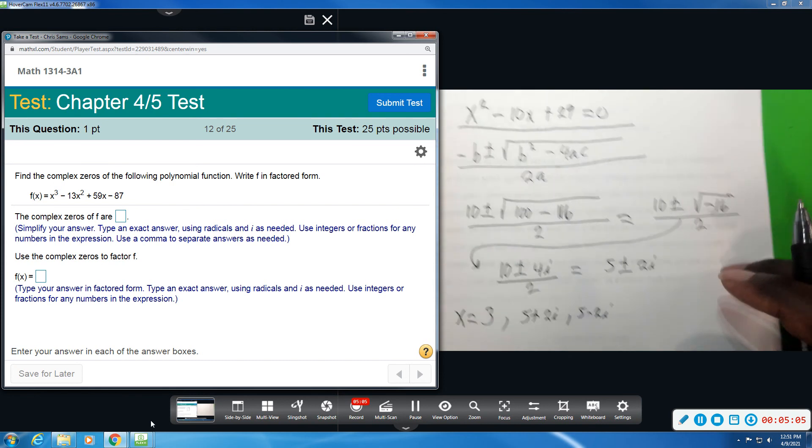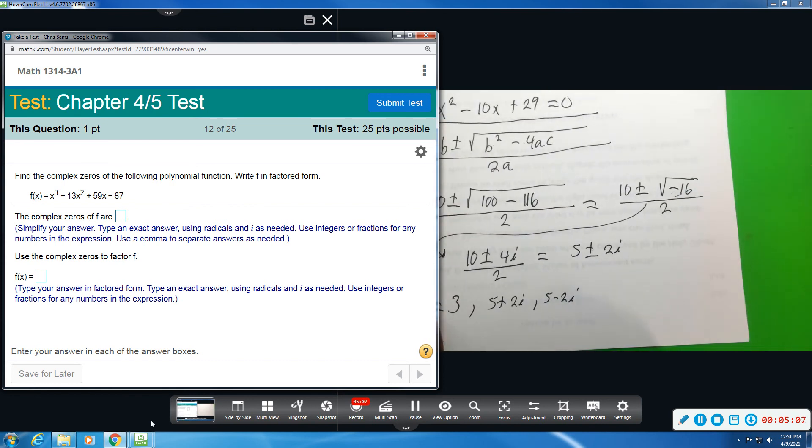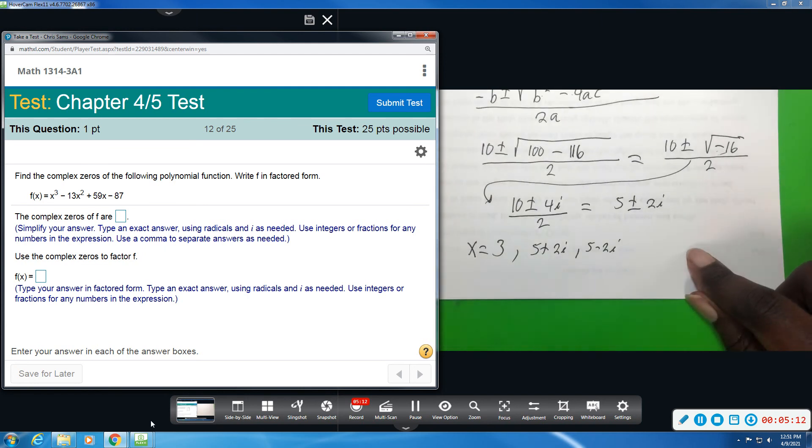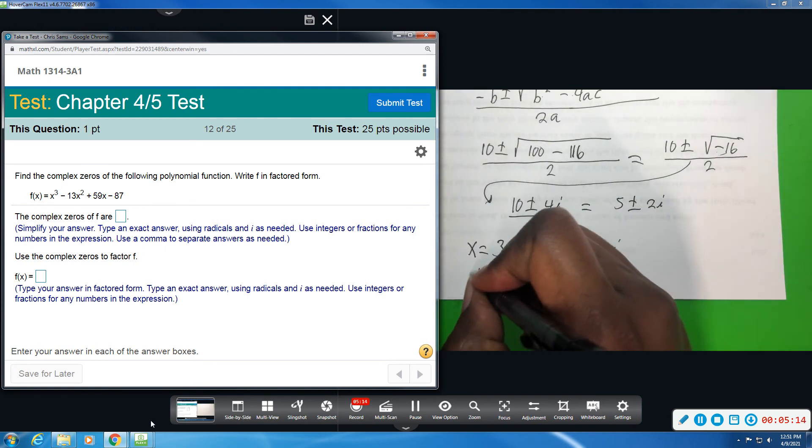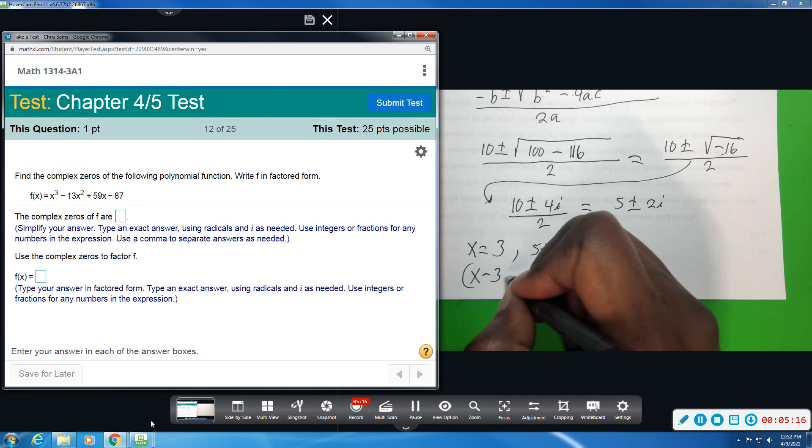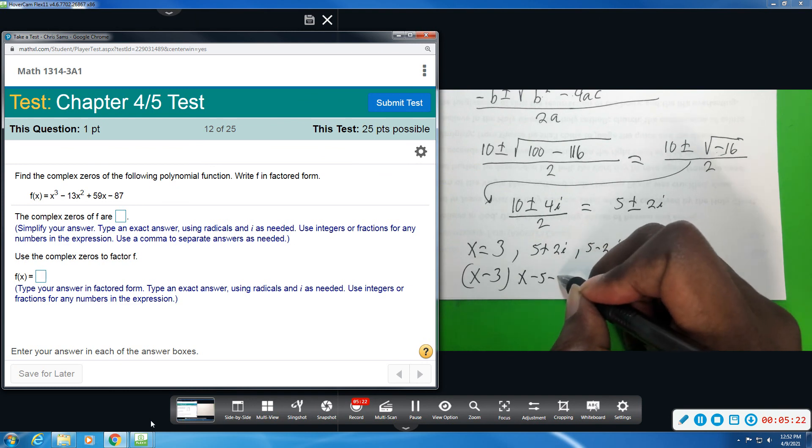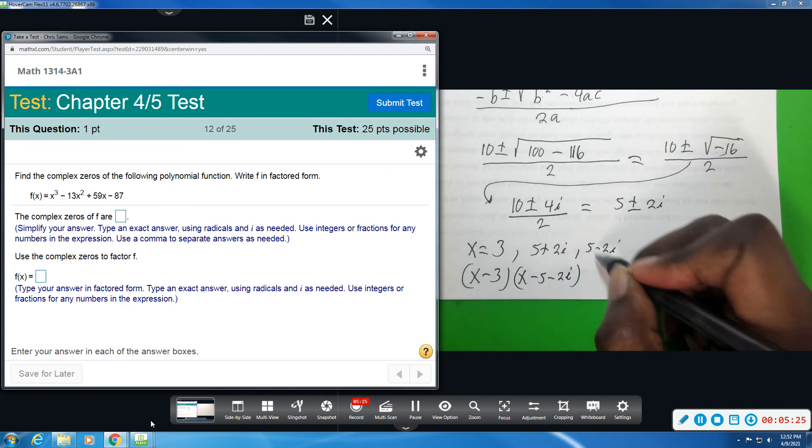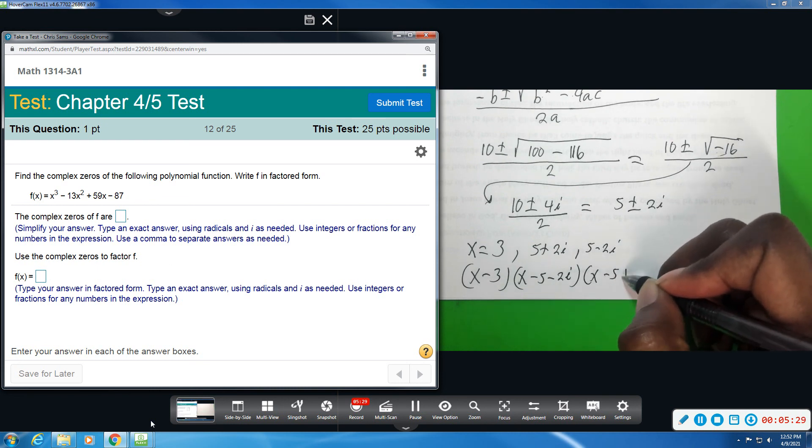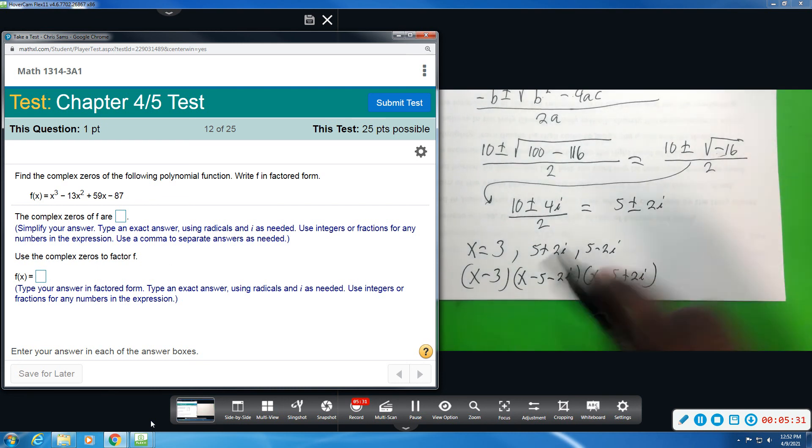When we write this as linear factors, we're going to be moving these on the other side of x. And so in the factored form, this will be x - 3. This will be x - 5. You just change all the signs. And then -2i. And then this one will be x - 5 + 2i. So you change all the signs to get the factored form. So these are the two forms that we want.